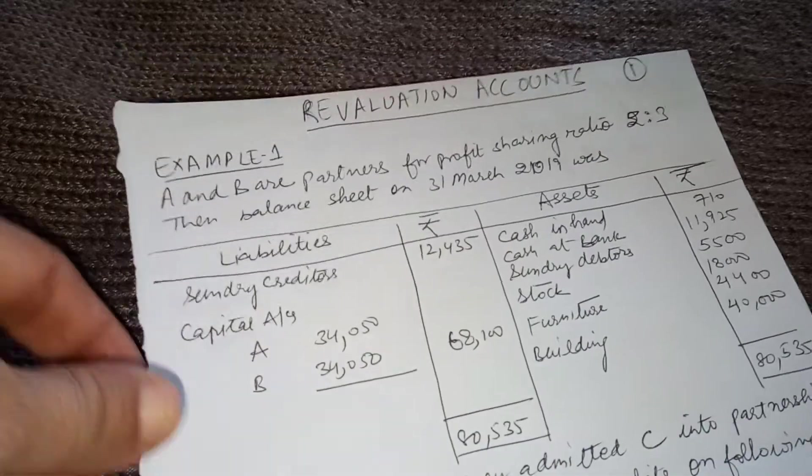Here is the first question. A and B are partners with a profit sharing ratio of 2:3. Their balance sheet as on 31st March 2019 shows creditors, capital accounts, cash in hand, cash at bank, sundry debtors, stock, furniture, and building. On April 1, 2019, they admitted C into partnership for one-third share in future profits. C is to bring 30,000 as capital and 20,000 as goodwill, which is to remain in the business.